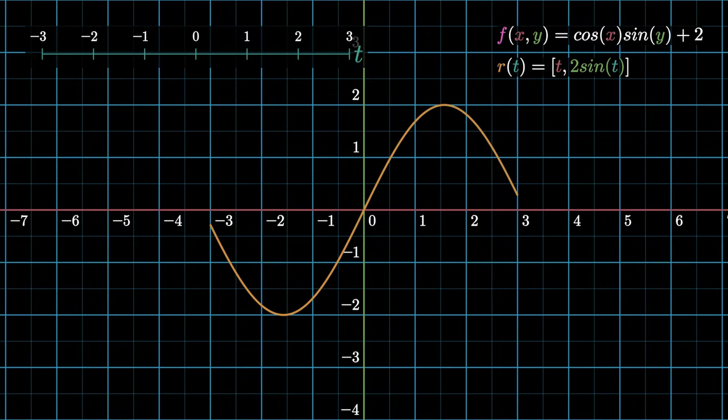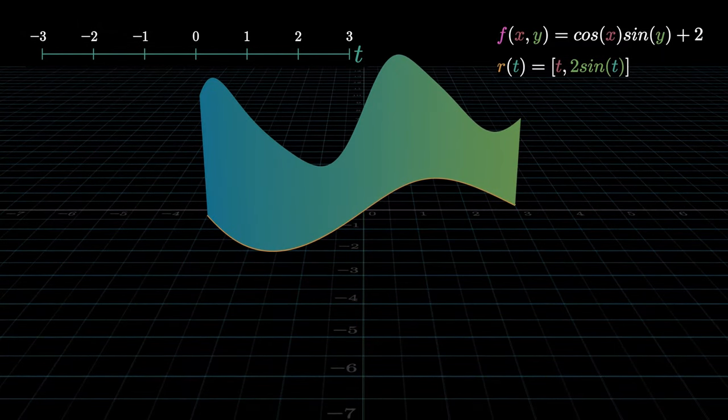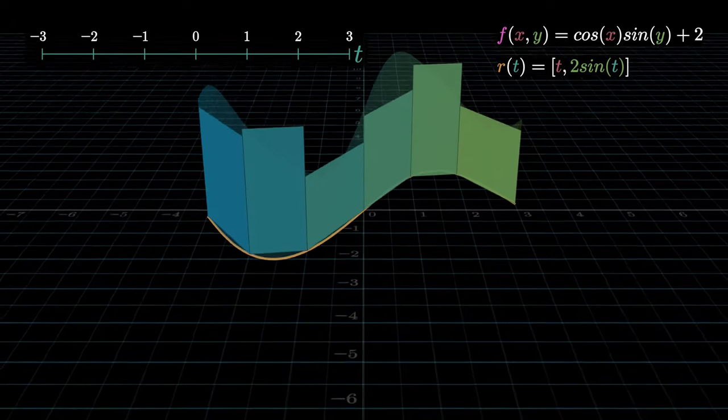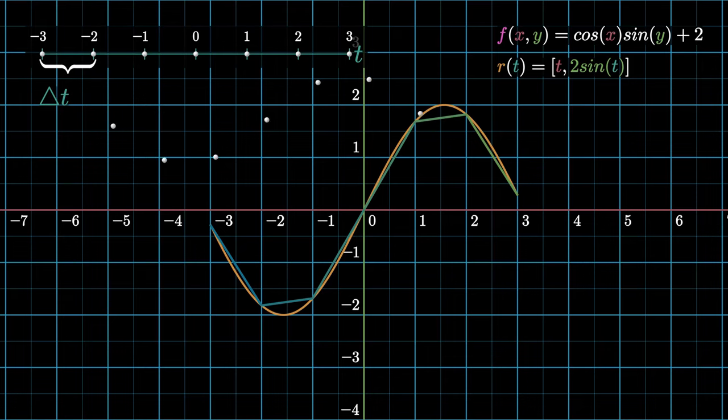Just like we did for single integrals, we'll begin by approximating this curved area with a bunch of rectangles lying along those points on the curve corresponding to the evenly spaced samples between the t limits whose width delta t is 1 for now. We will let it approach 0 in a minute.